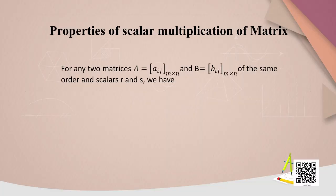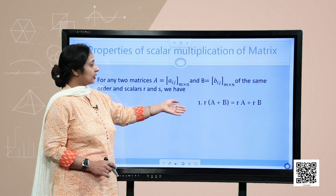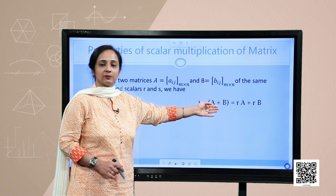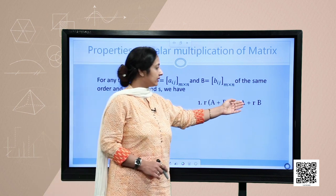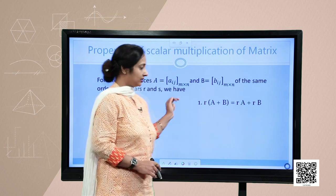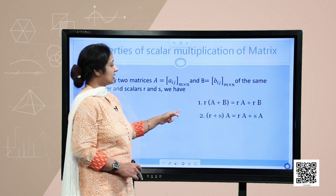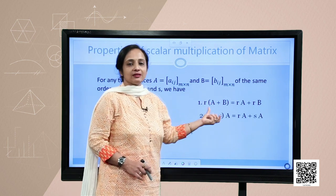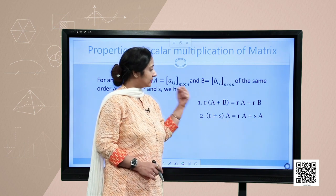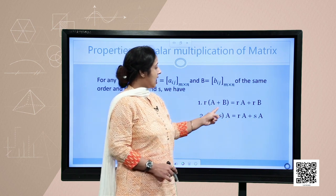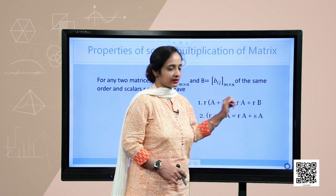For any two matrices A and B of the same order and scalars R and S, the properties of scalar multiplication are: first, R multiplied by (A plus B) equals R into A plus R into B; and second, (R plus S) multiplied by A equals R into A plus S into A.